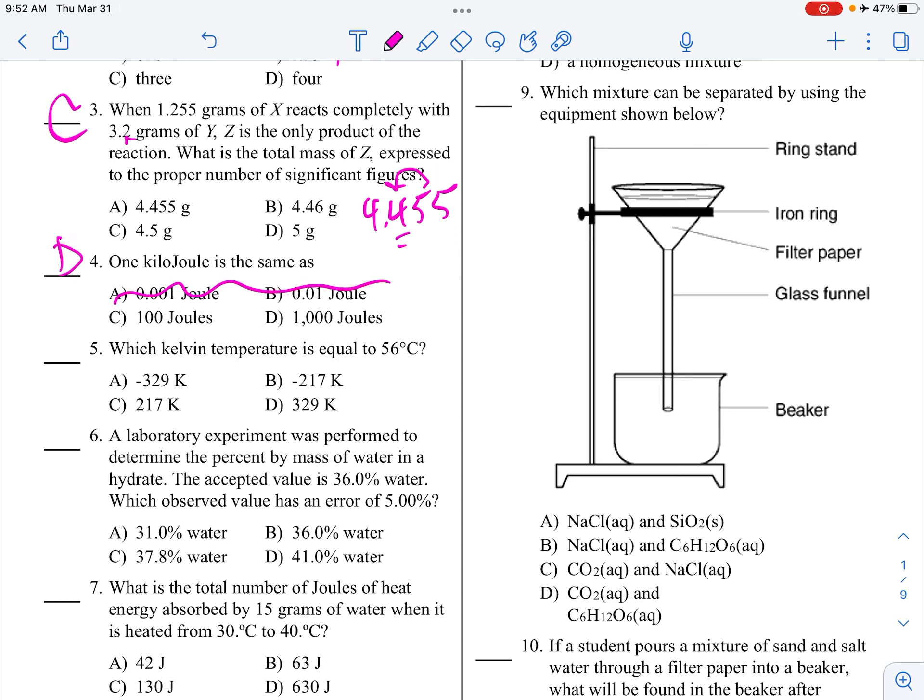What is the total number of joules of heat energy absorbed by 15 grams of water when it's heated from 30 to 40 degrees Celsius? So back to our reference tables. The heat formulas, when there's a delta T, a change in temperature, we're going to use Q equals MC delta T. Where Q is heat in joules, M is mass. Specific heat capacity, if it's water, which I believe it is, we use this value right here, 4.18 joules per gram degrees Celsius or Kelvin. And then our delta T is T final minus T initial.